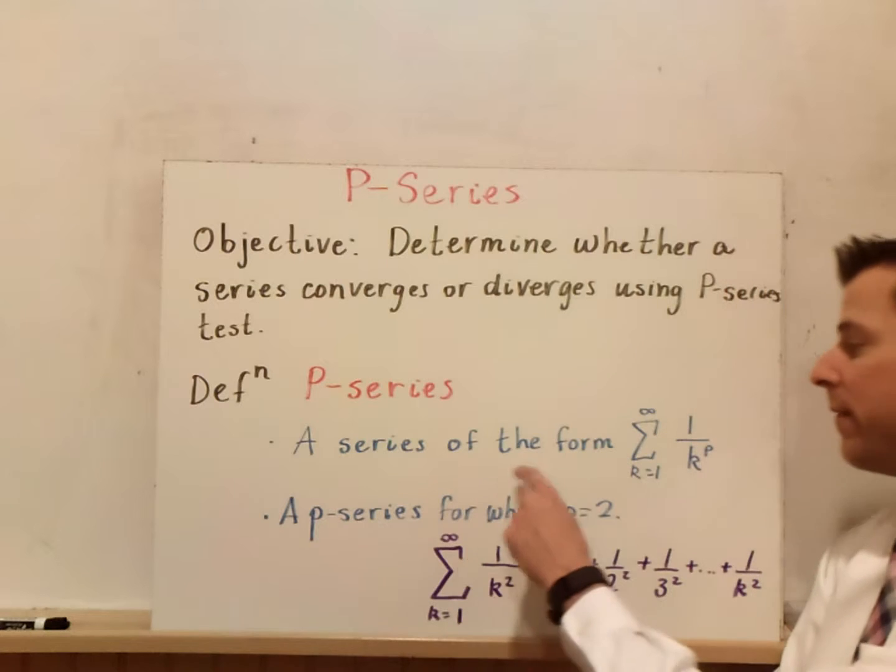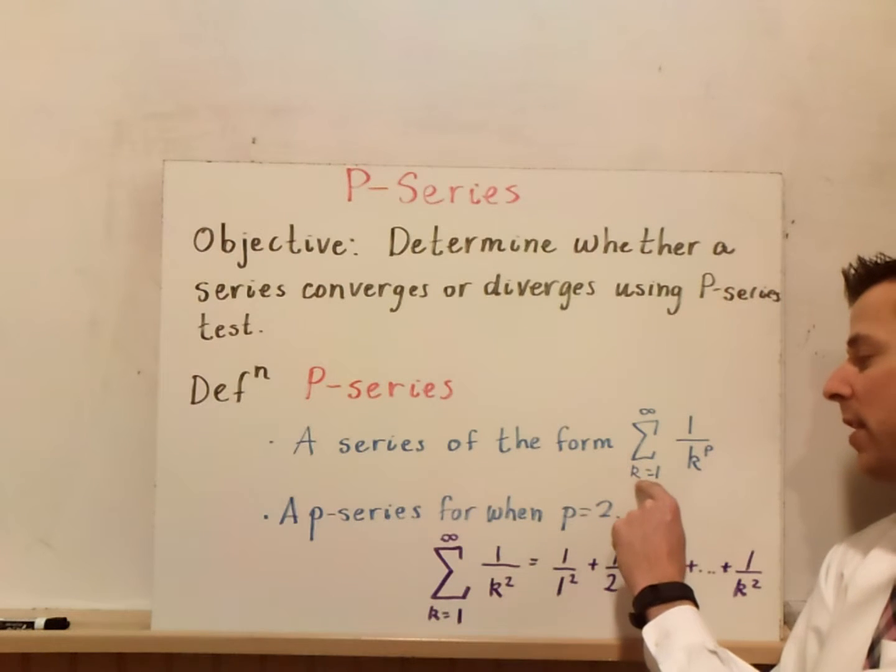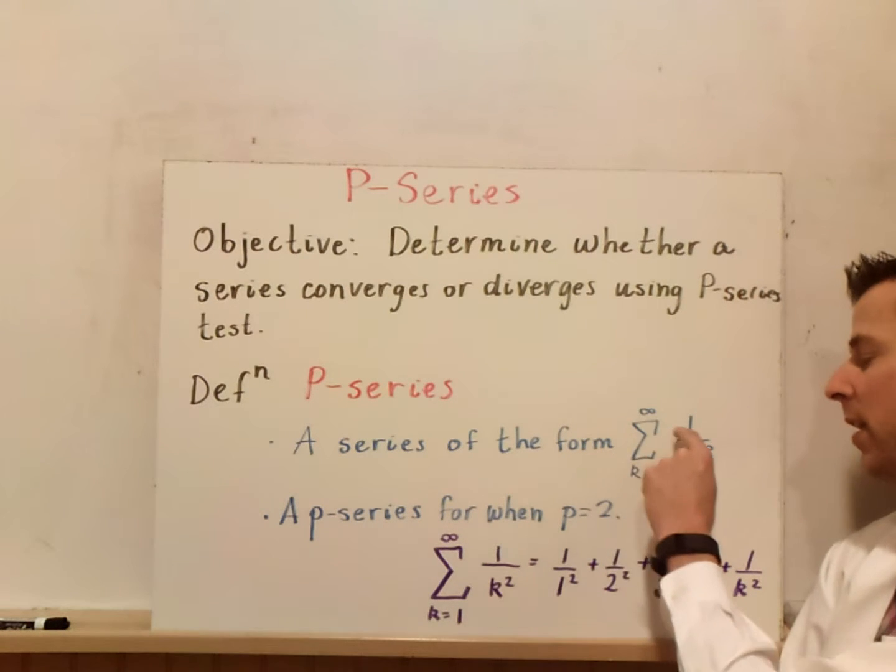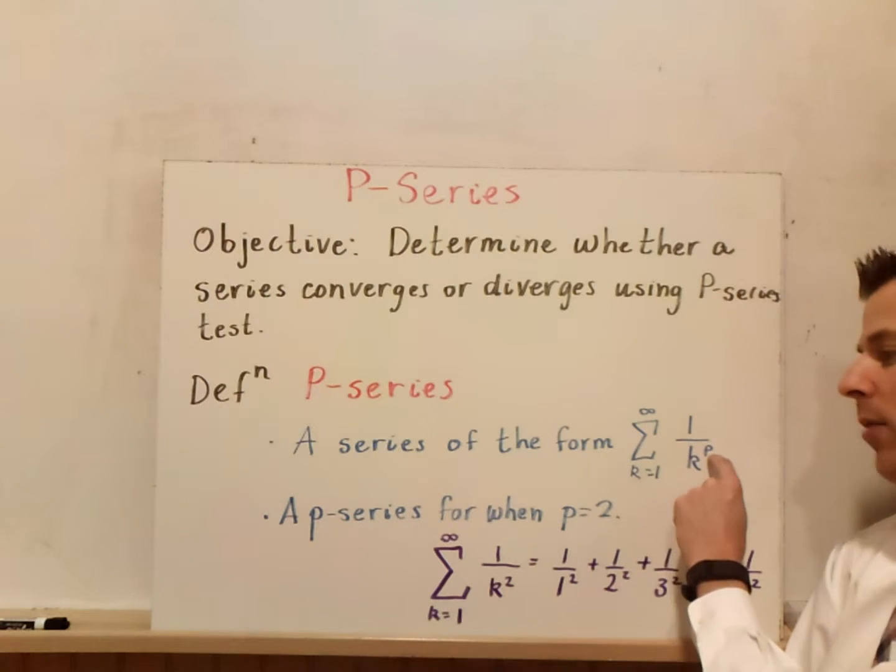A p-series can be defined as a series as k goes from 1 to infinity of 1 over k to the p power.